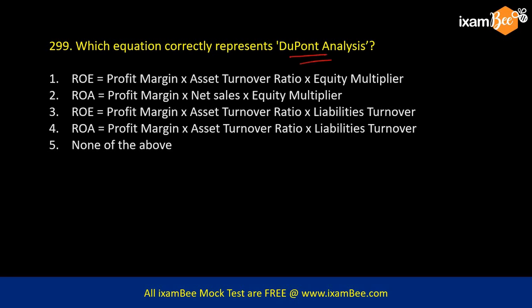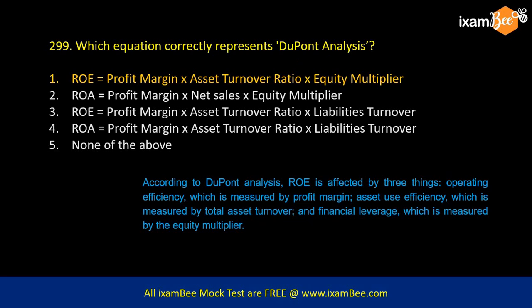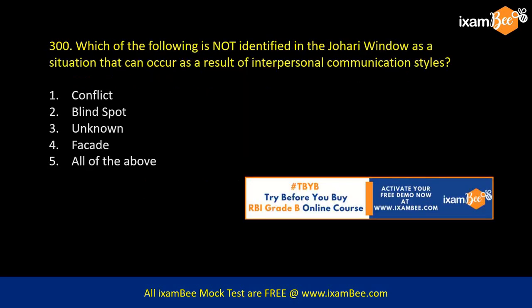The DuPont analysis — also asked earlier in RBI exams — tells you that ROE (Return on Equity) depends on three things: profit margin, asset turnover, and equity multiplier. If you have a higher profit margin, higher asset turnover ratio, and a higher equity multiplier, your return on equity will increase. So all three are ways to increase your return on equity.